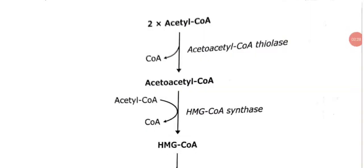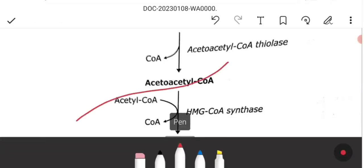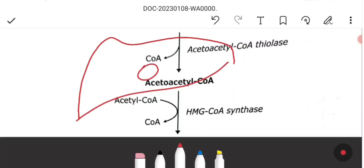Now let's go to the metabolism. First, let's see the synthesis — ketogenesis. Ketogenesis means ketone body formation. Ketogenesis is the process by which ketones are produced. Ketone body synthesis occurs in liver cells, which are called hepatocytes.